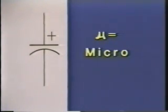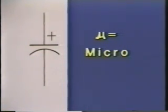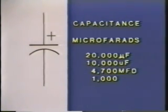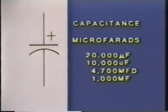We use the Greek letter mu to denote the metric prefix micro, or one millionth. But because the Greek letter mu looks a lot like our English letter U, you will often see capacitor abbreviations as µF, UF, MF, or just plain MFD. All of these ratings indicate microfarads, and the ratings will be printed on the capacitor itself and in the power supply schematic.